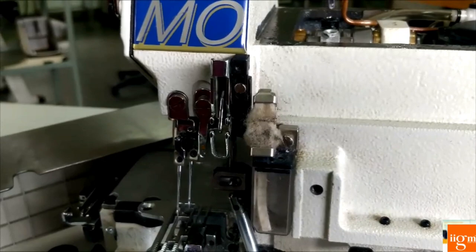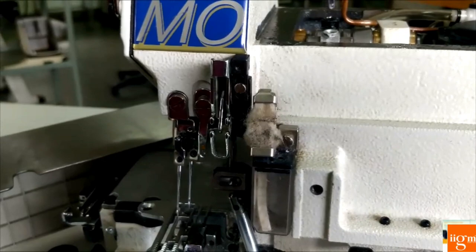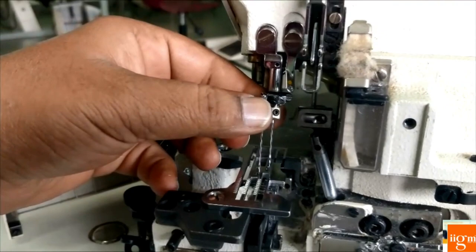Loosen this 5mm allen key. Now, this needle looper height, we can change, we can adjust up and down and you hear how the lower looper catches the needle thread and upper looper catches the lower looper thread.